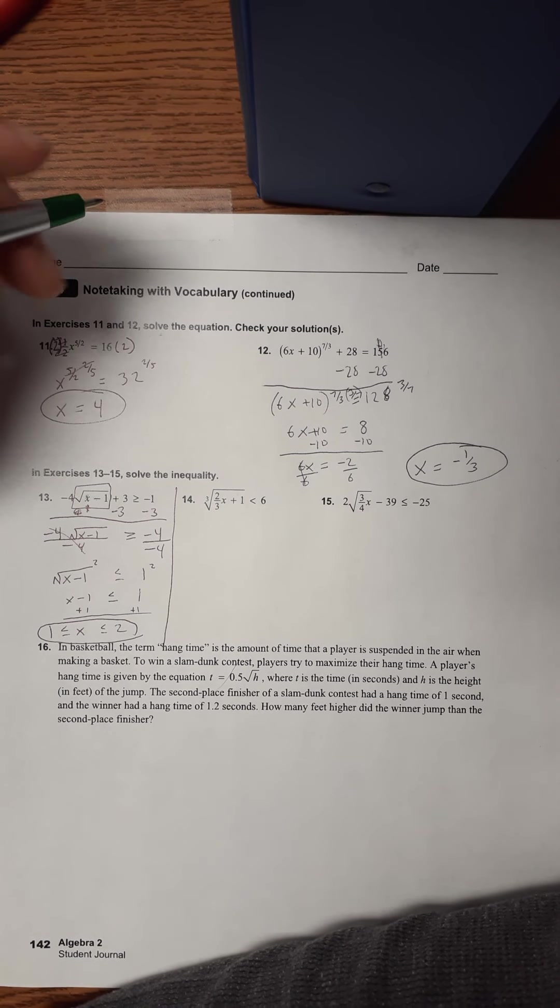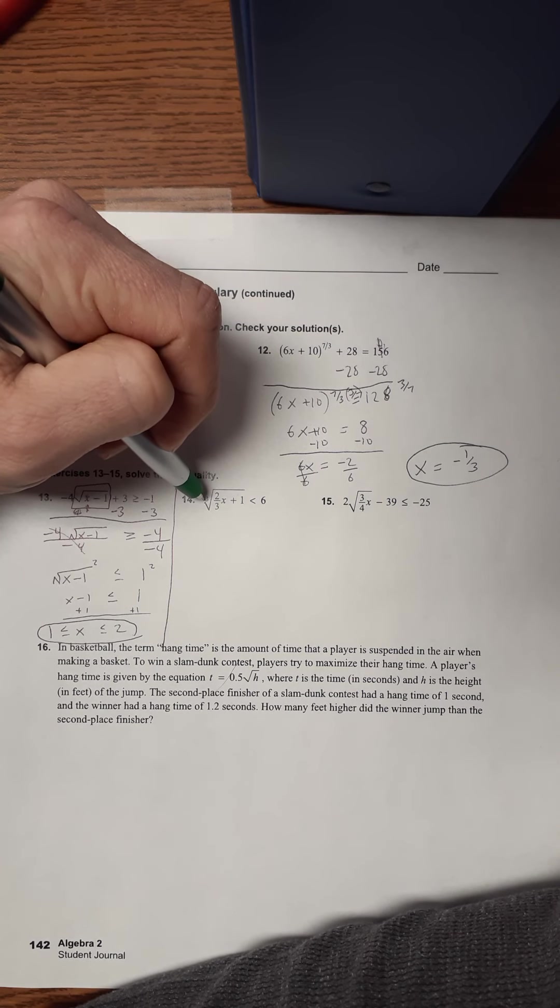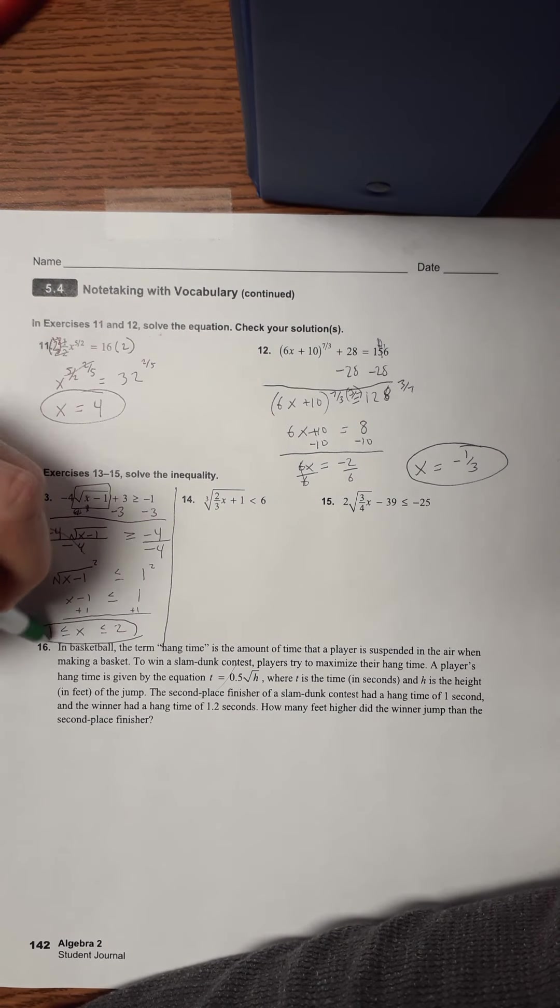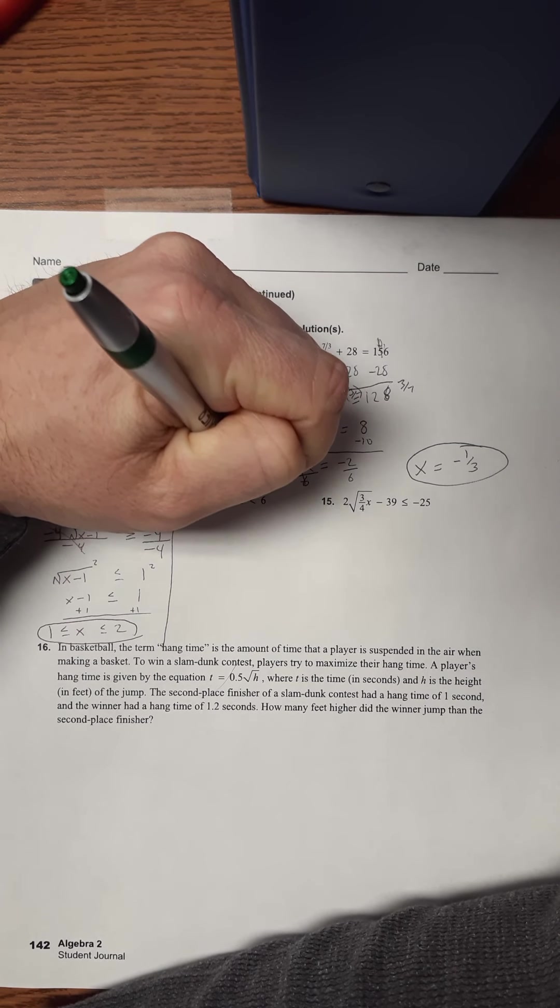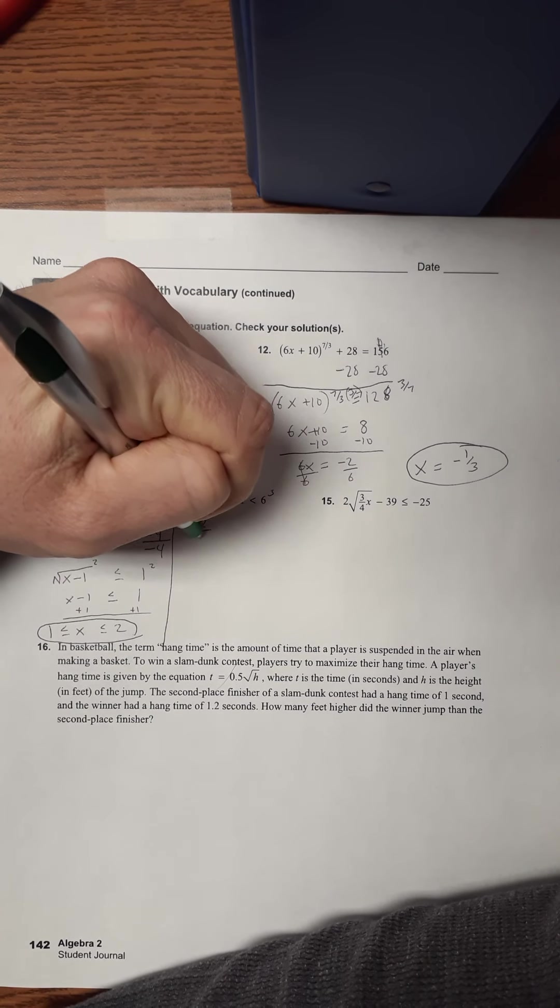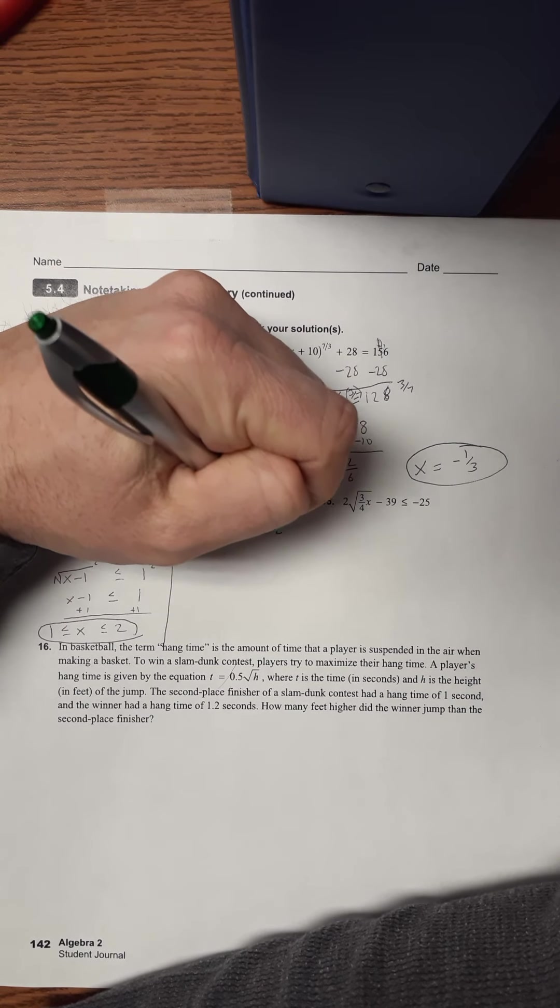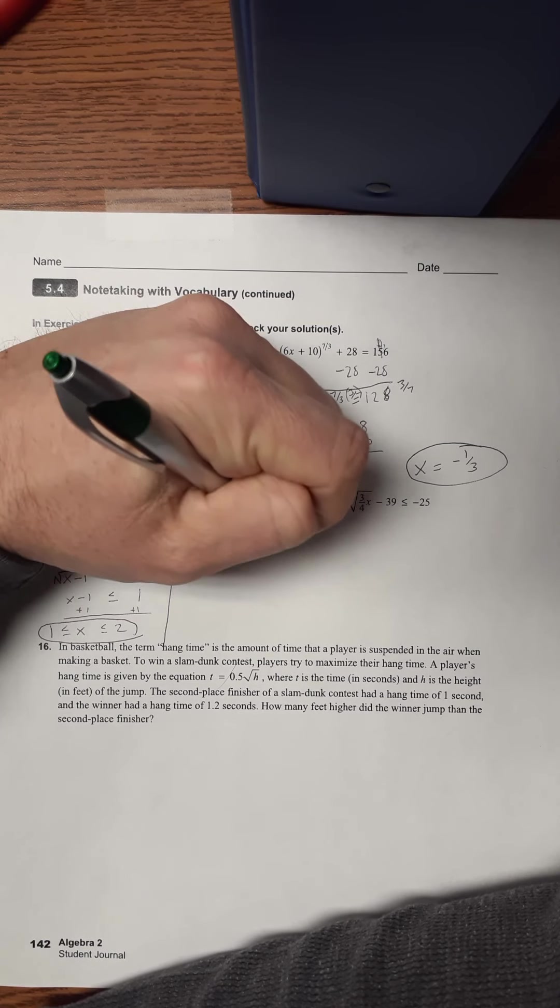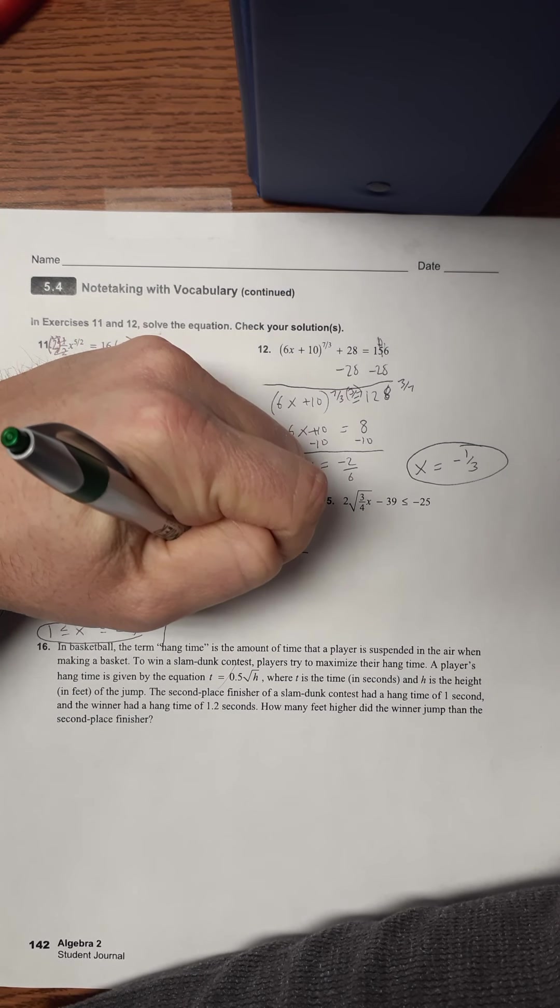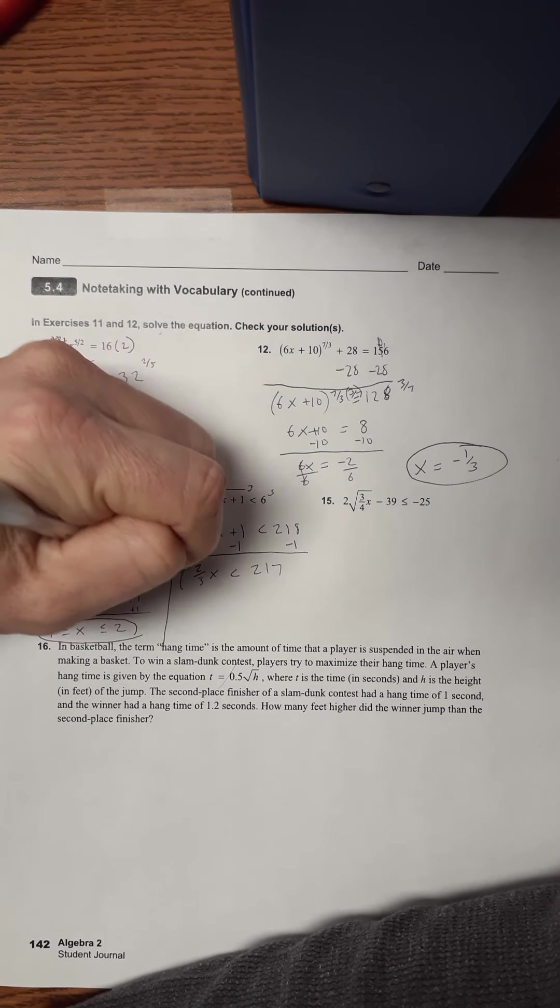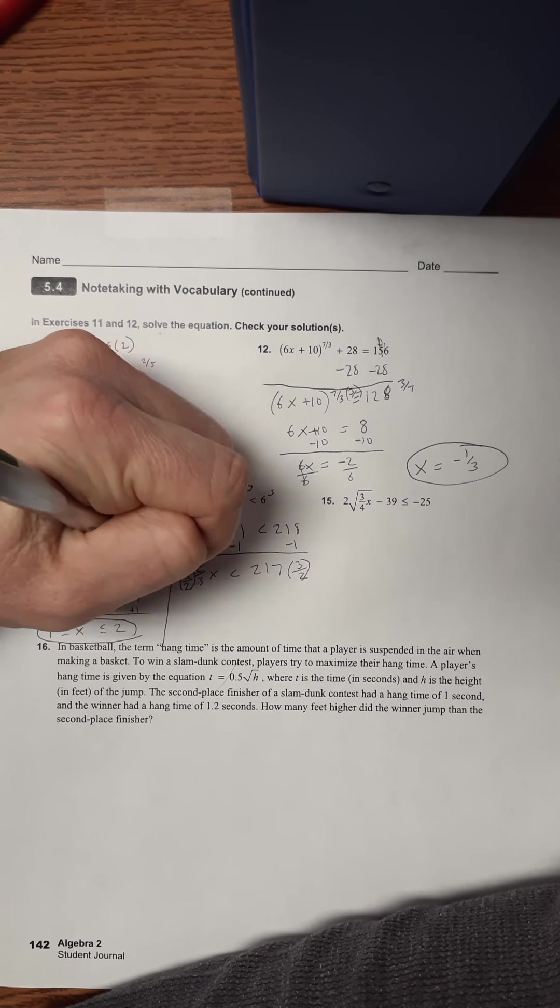We're going to do number 14, and then we'll call it good. So, here I've got a third root. And I just want to start out by saying that third roots are allowed to turn negative. So, on this one, we're not going to have to do this step over here. So, let's isolate the radical. Done. We'll raise each one to the third power, because it's a third root. So, that gives me 2 thirds x plus 1 is less than 6 to the third. We got there 218. So, we'll subtract 1. 2 thirds x is less than 217. So, now I'm going to multiply by the reciprocal. So, I'll multiply each side by 3 halves.